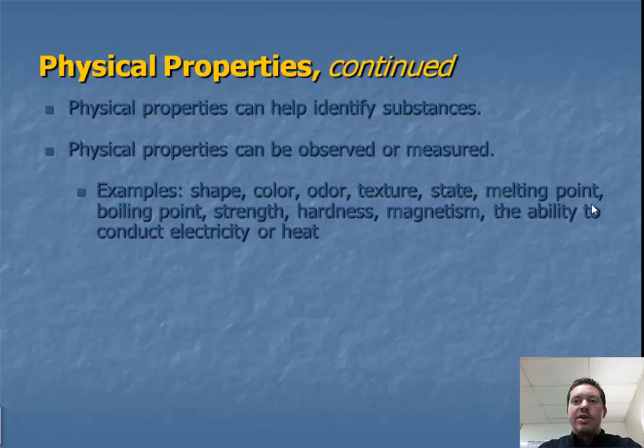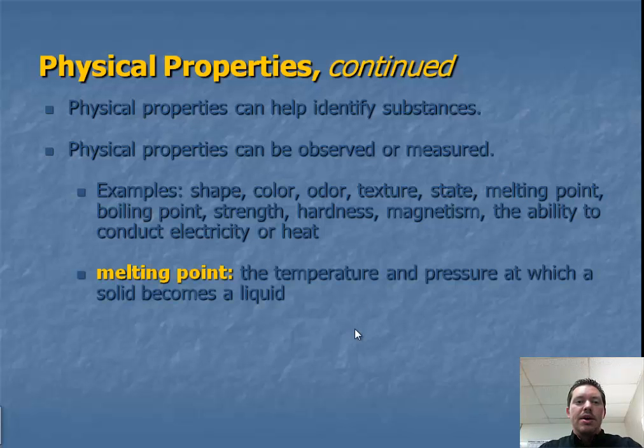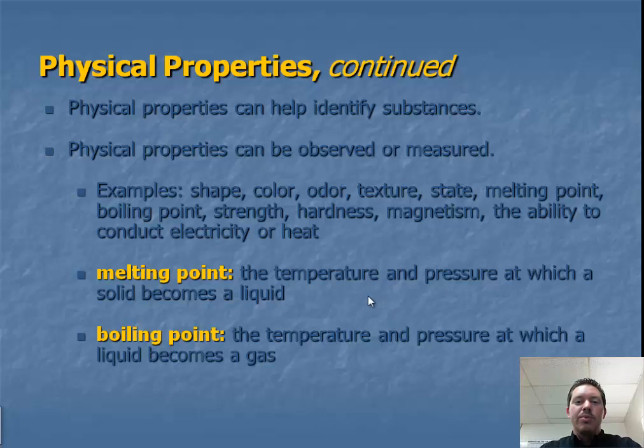Let me make a quick note. Melting point is just the temperature at which an object will melt. Boiling point is the temperature at which an object boils. Melting point is the temperature and pressure at which a solid becomes a liquid. And boiling point, the temperature and pressure at which a liquid becomes a gas. A little more detailed definitions there.